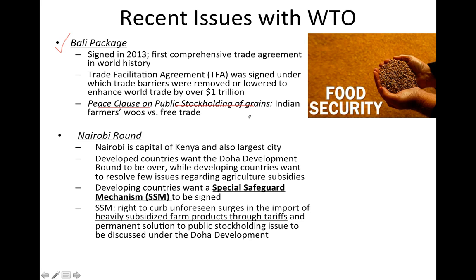The government wanted the peace clause because it gives huge subsidies to farmers by buying grains at a supported price and selling them at a lower price in the market. Under the Bali Package, these subsidies were supposed to be phased out across the world to create a level playing field, allowing countries to import food grains from wherever they were cheapest. However, this was not in the interest of Indian farmers, as cheap imports from the US, Europe, Myanmar, or Australia could lead to job losses. That is why the peace clause was introduced after India demanded it, so that its farmers are protected.